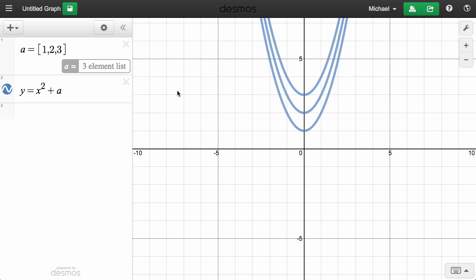Desmos creates a graph for each value in list a. And if you make an adjustment to list a, you automatically get the new results in the coordinate plane.